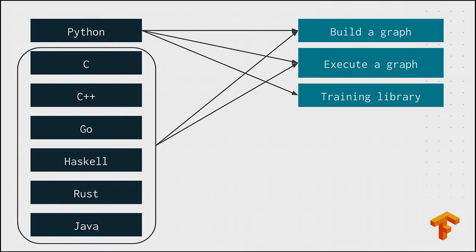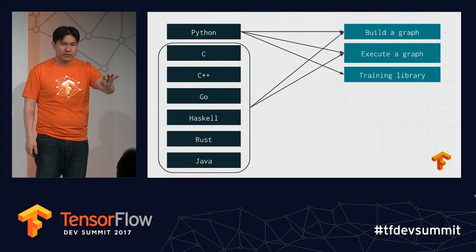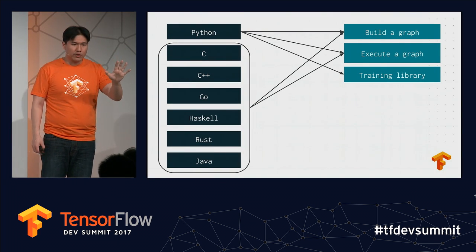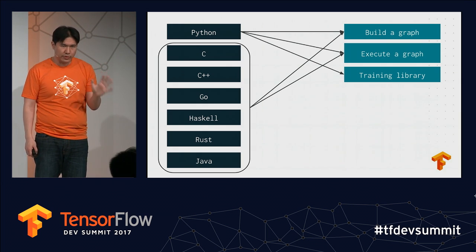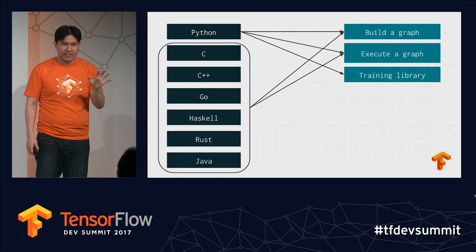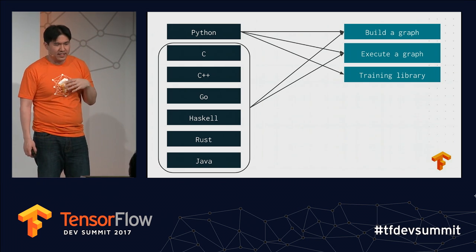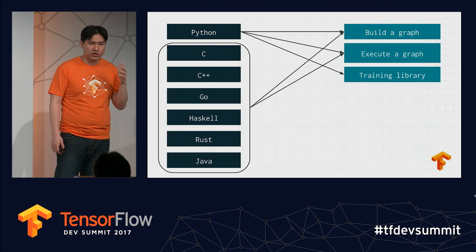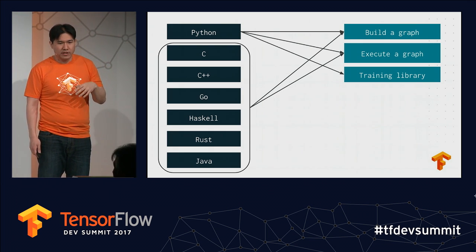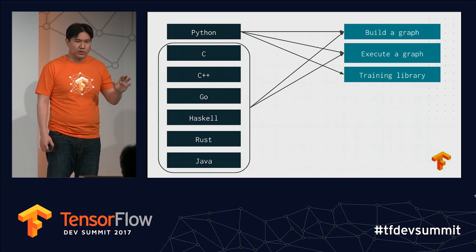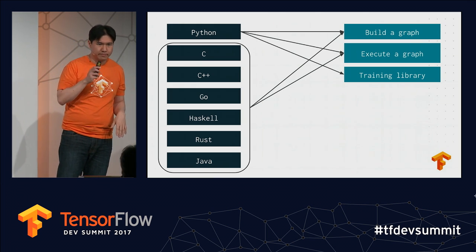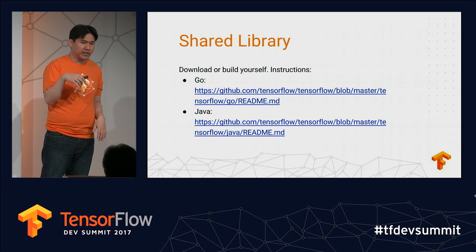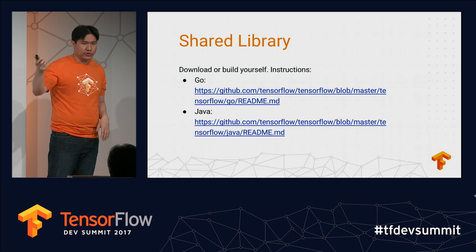TensorFlow supports a ton of different languages, all available in our TensorFlow GitHub repository. All of these languages can be used to build and execute TensorFlow graphs. A common question is whether any language besides Python can be used for training. The answer is no. A lot of supporting libraries — the training libraries, high-level APIs, optimizers, the RNN library — are only available in Python at the moment. I'd recommend only doing training in Python, but you can do inference in any of these other languages. Instructions for using the shared library are in the readmes associated with each language.